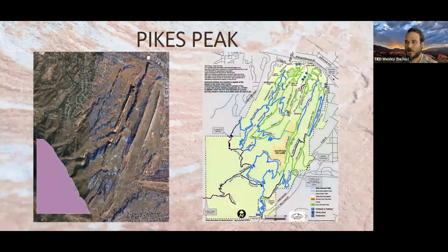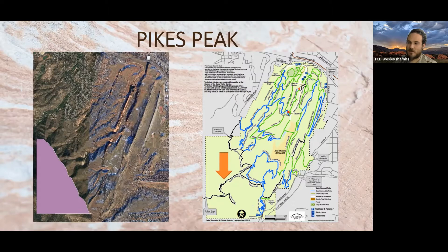We're going to start the hike by showing where in the park each formation is located and where we can look at them. We'll start with the Pikes Peak Granite — this is really the only non-sedimentary rock we're going to talk about. The best place to see it is anywhere along the very southwestern edge, but I really enjoy the Palmer Red Rock Trail.